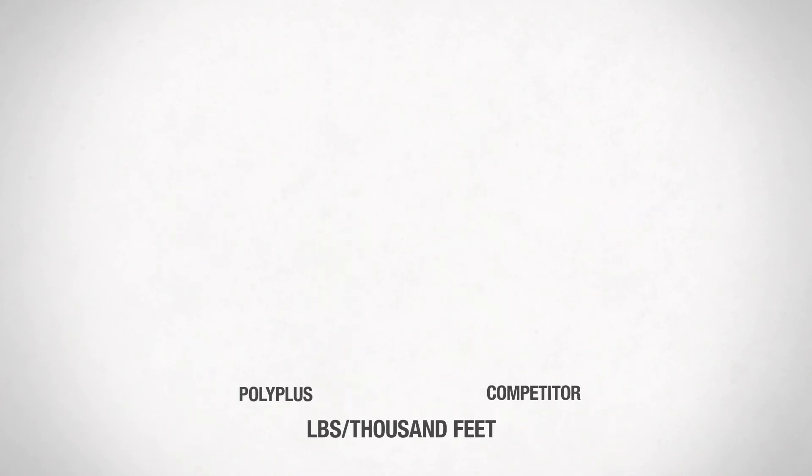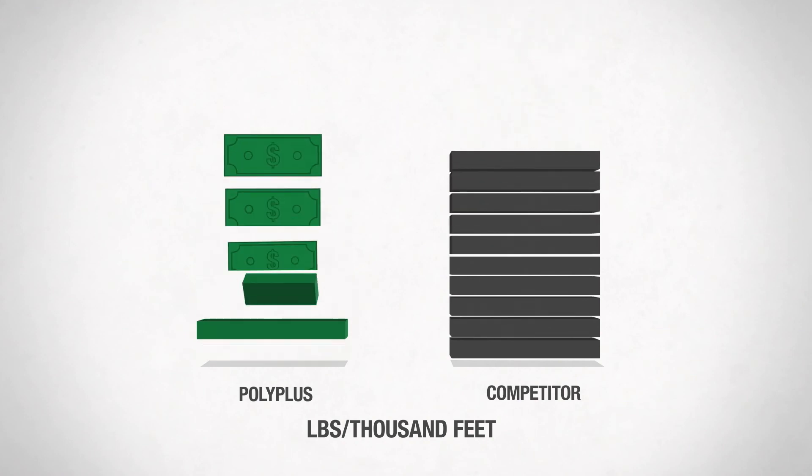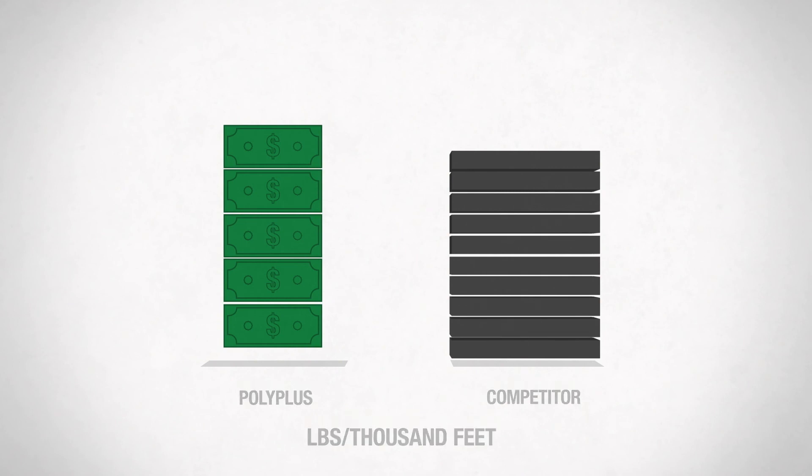The normal application rate for most formulations of Lesko Poly Plus XR and SL is less than 5 pounds of product per 1,000 square feet. Compared to the higher usage rate of the competition, your savings with Poly Plus could be substantial.